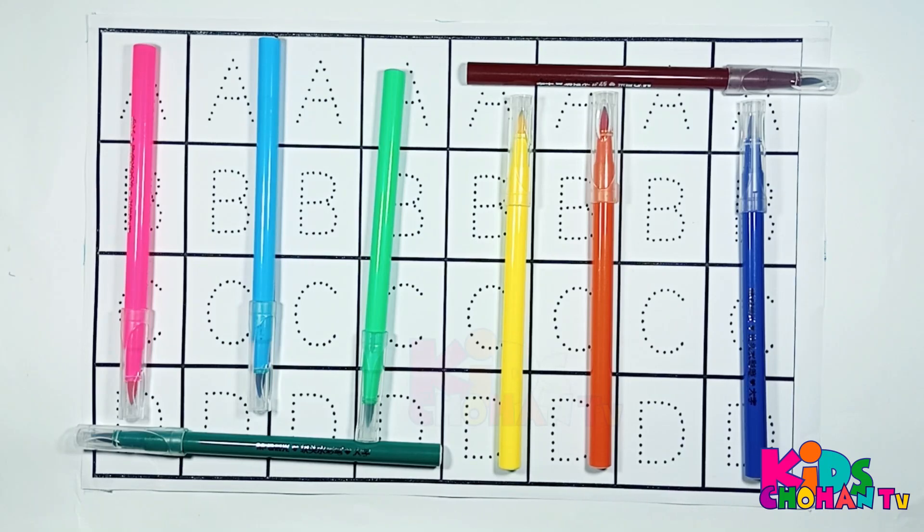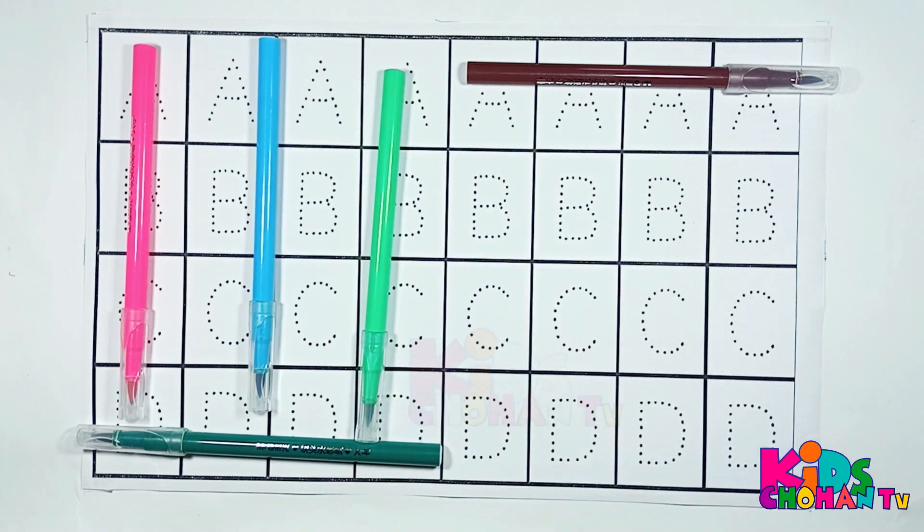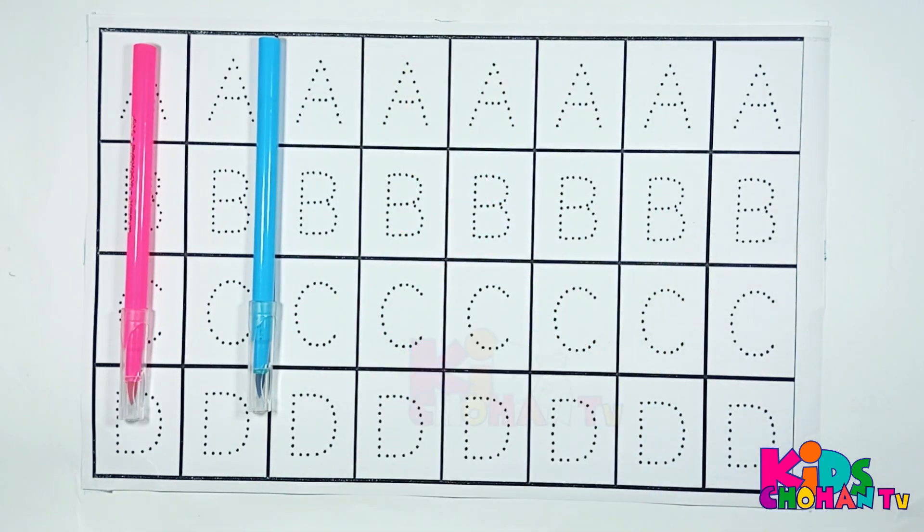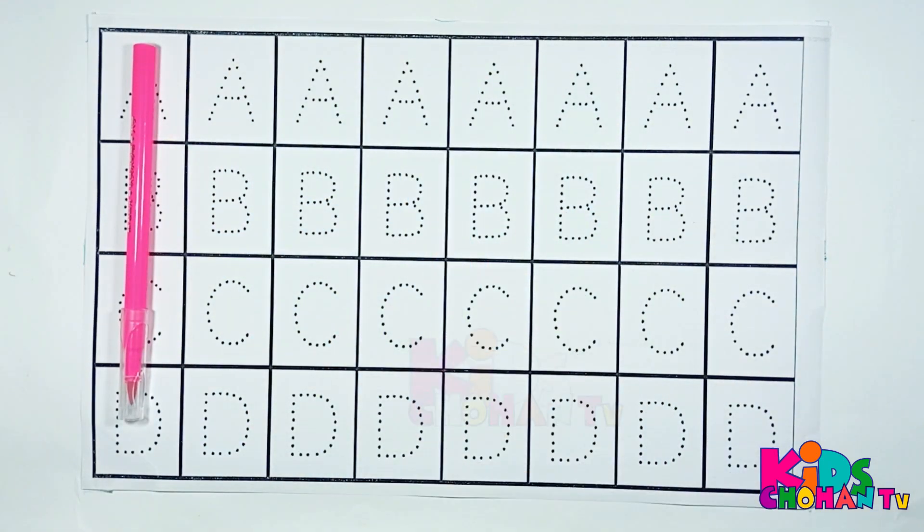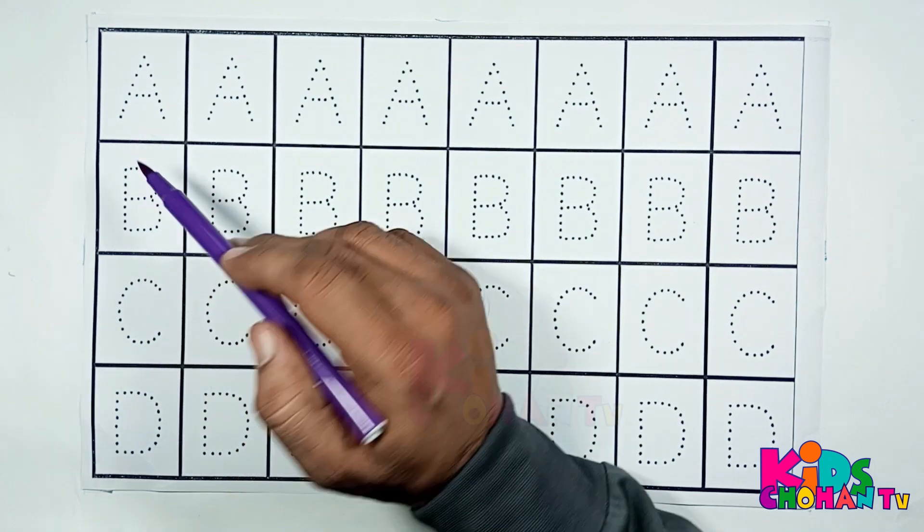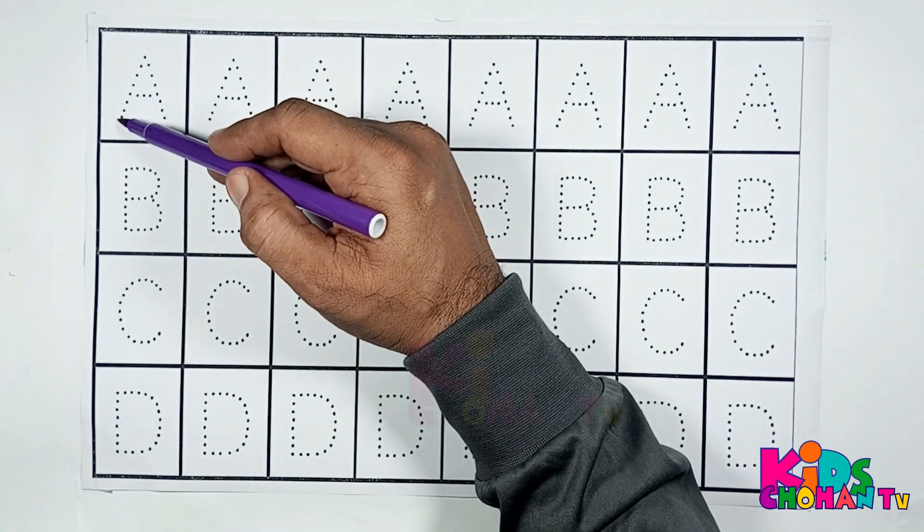Hi kids, welcome back! Let's learn color names: blue, orange, yellow, brown, green, light green, sky blue, and pink. In this video, we'll test capital letters A, B, C, D. Let's start!